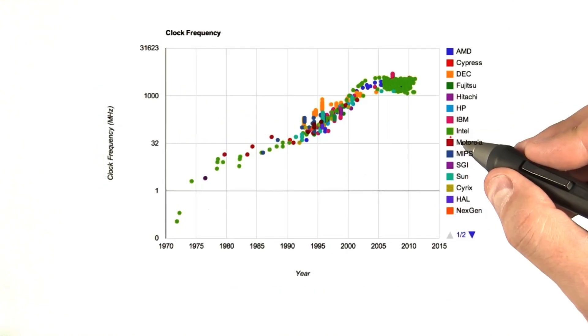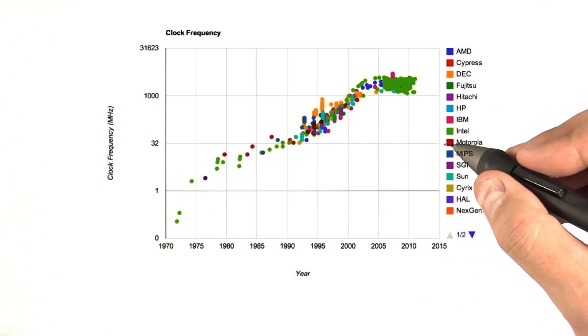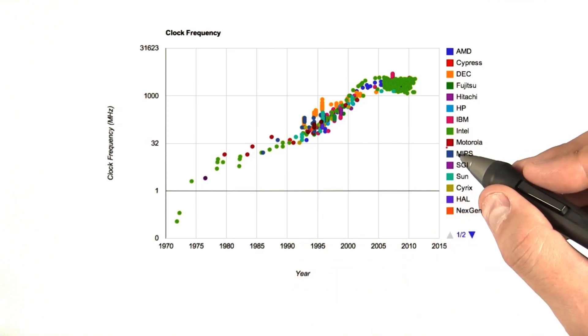However, we've also got some bad news. Historically, as transistors improved, processor designers would then increase the clock rates of processors, running them faster and faster every year. Let's take a look at this diagram of clock speeds over the years.